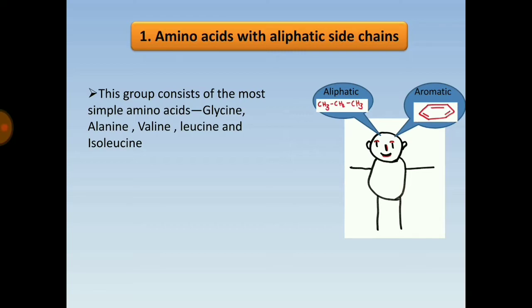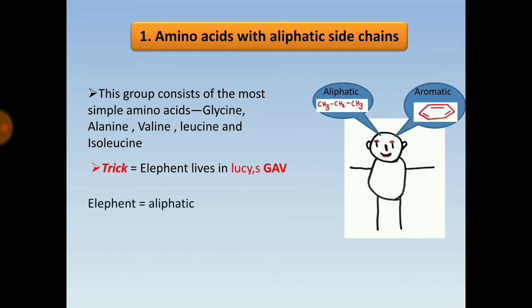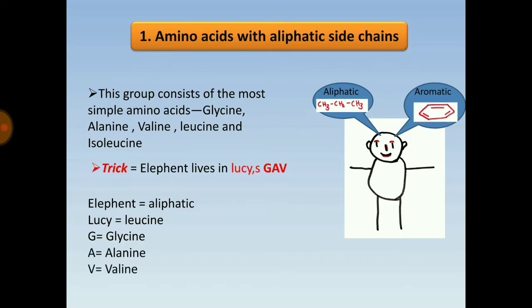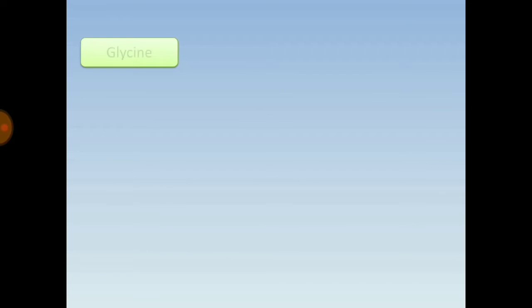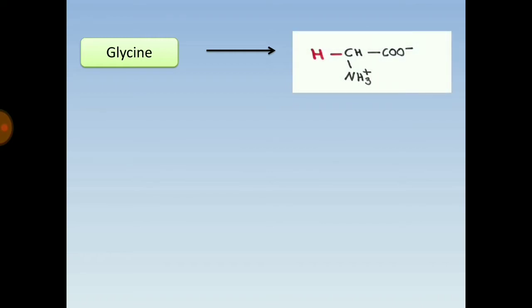A trick to remember aliphatic amino acids: 'Elephant Leaves In Leucine Go Now' — Elephant = aliphatic, G = glycine, A = alanine, V = valine, and Leucine = leucine. This trick makes it easy to memorize these amino acids.